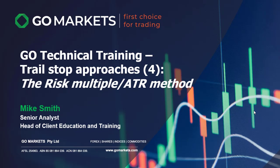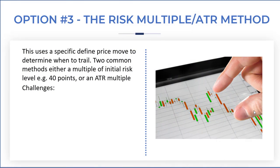The fourth in our trailing stop technical training series looks at the risk multiple or ATR method, where we consider the degree of risk taken at the beginning of a trade and utilize that, or use a multiple of ATR as the level at which we potentially move the stop higher. It uses a defined specific price move to determine when to trail, and we can use a multiple of the initial risk level — so if our initial risk was 40 points, we do it at 40-point increments; if it's two dollars, we do it at two-dollar increments.